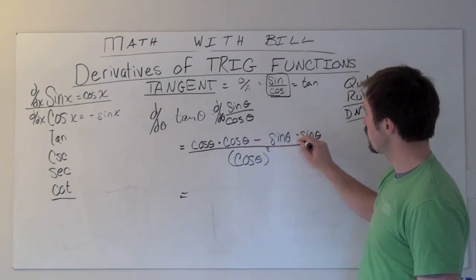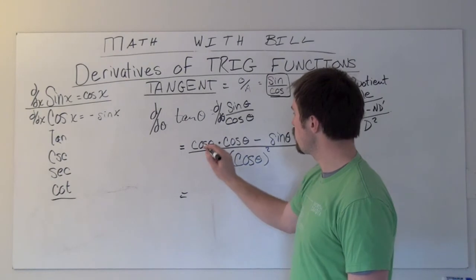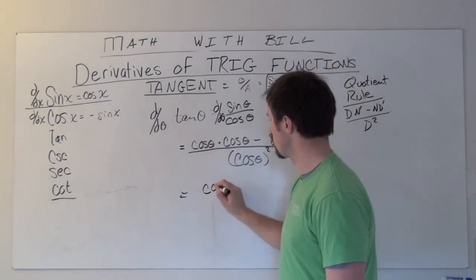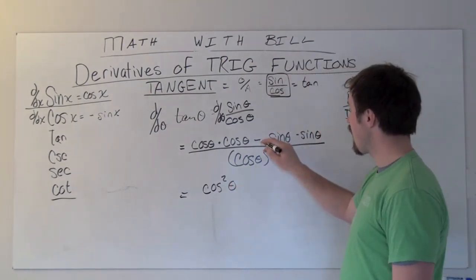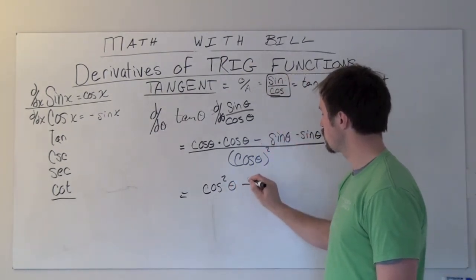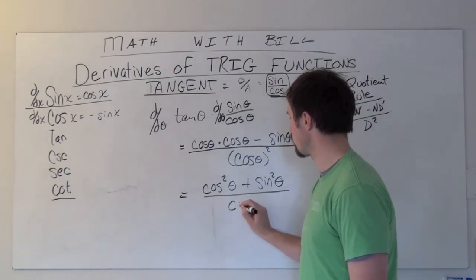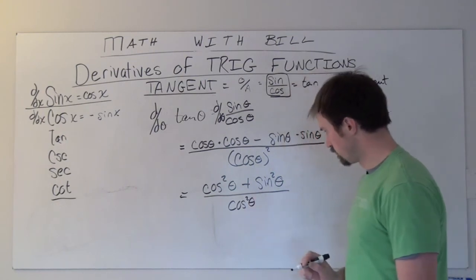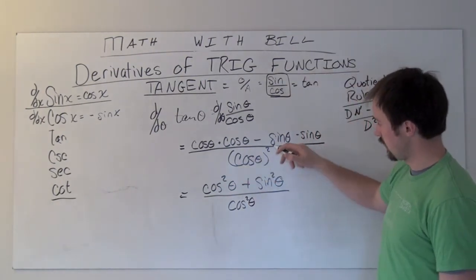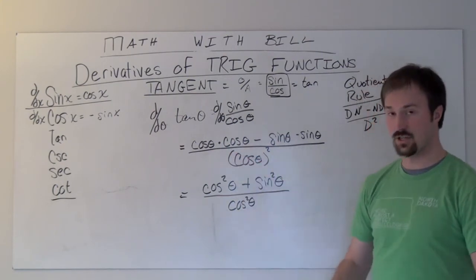We're subtracting something that's being multiplied. We're really subtracting a negative here. So what I'm going to rewrite is cosine times cosine is cosine squared theta. And I'm no longer subtracting, but now I'm adding sine squared theta. And I'm dividing this whole thing by cosine squared theta. Again, cosine theta squared, that quantity squared is the same thing as cosine squared theta.